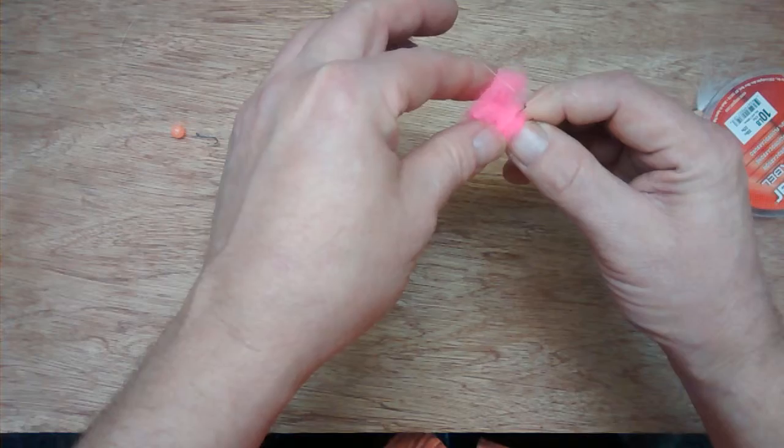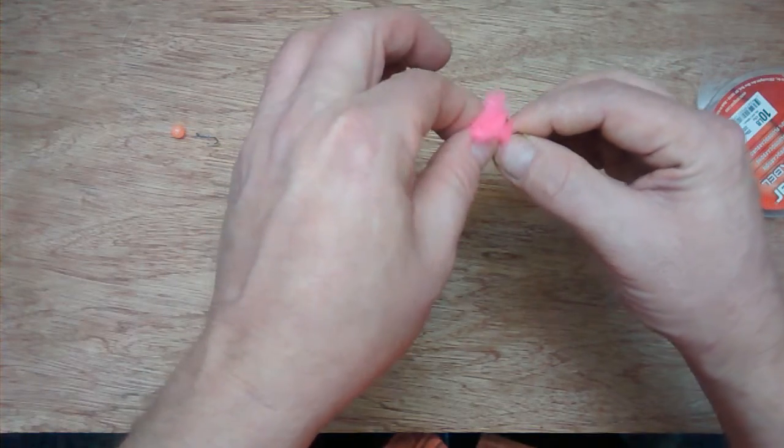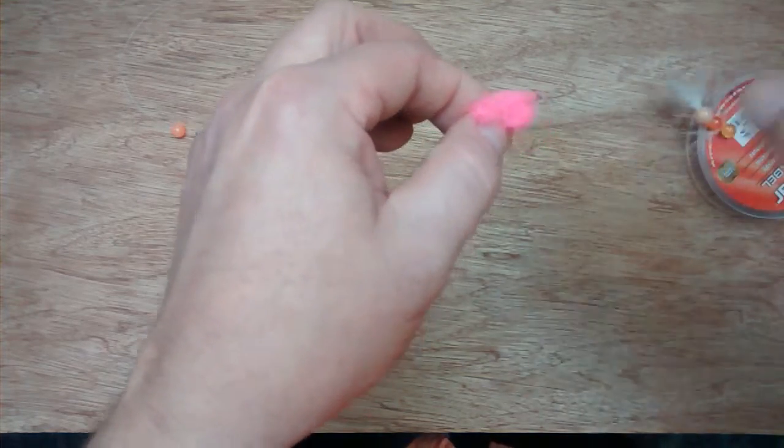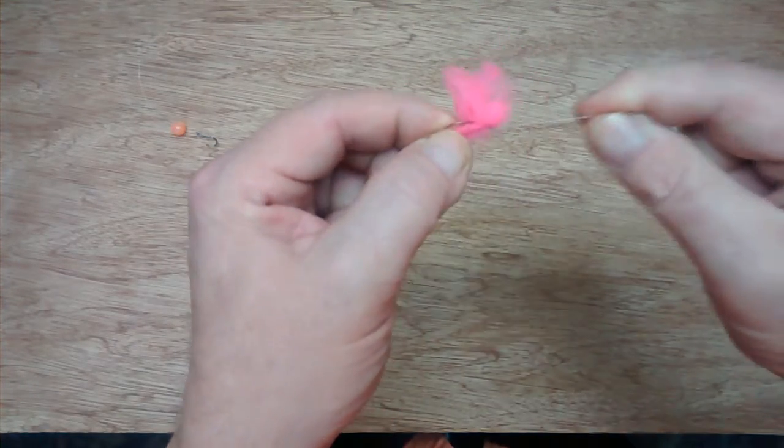With the loop of the egg loop knot attached to the hook and the loop opened, we will go ahead and thread the row through and cinch it down with a variation of egg loop knot.